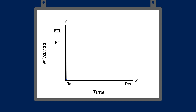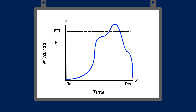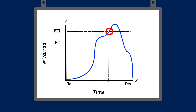Let's say Varroa populations in January are very low, starting near zero. But throughout the year they start to grow, and certainly in late summer and early fall they peak, then may go back down as the bee population goes down in December. In theory, you hit the economic injury level for Varroa somewhere in late summer or early fall — this is the point at which you are beginning to suffer economically: your colony is dying, not making honey, not available to make splits. The economic threshold is the level at which, if you treated, you would bring the Varroa population back down so that you never hit the economic injury level.